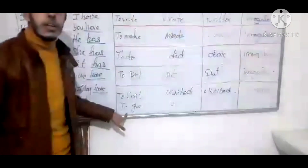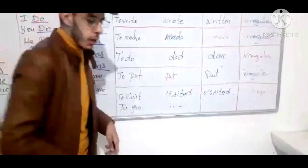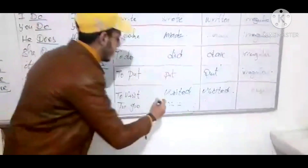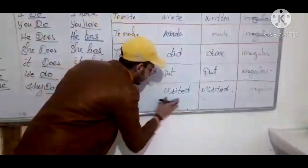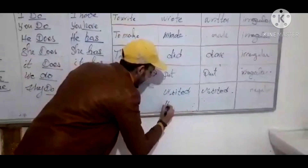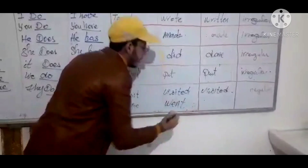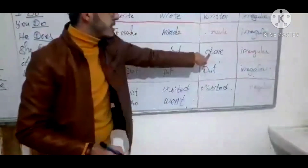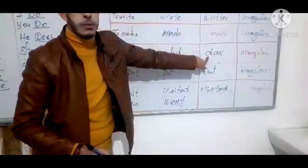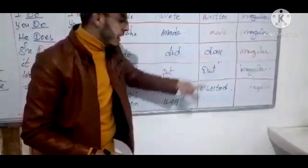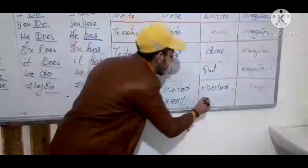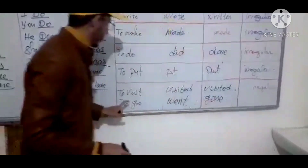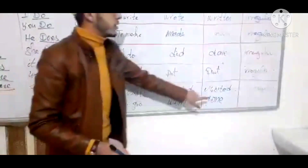What about the verb 'to go' in the past? The past is 'went' — W, E, N, T. And the past participle is like the verb 'to do' — instead of 'done,' it's 'gone.' So: go, went, gone.